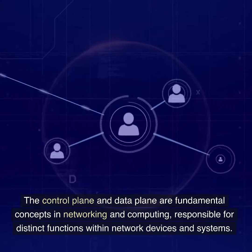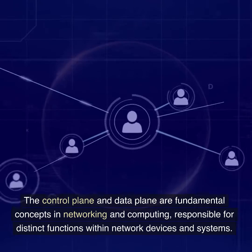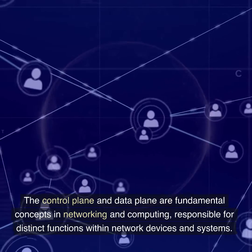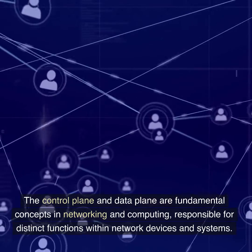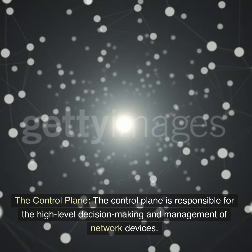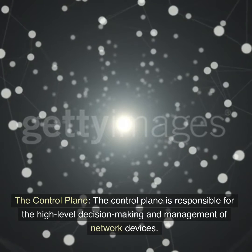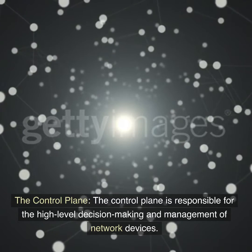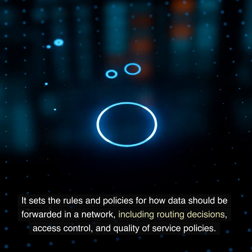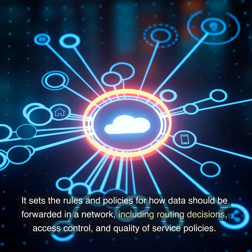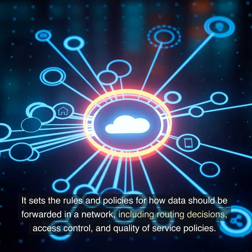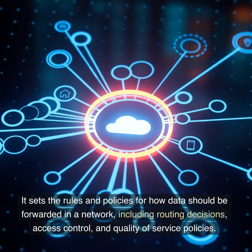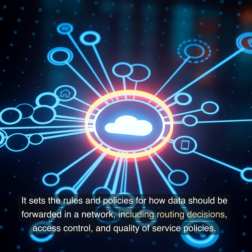The control plane and data plane are fundamental concepts in networking and computing, responsible for distinct functions within network devices and systems. The control plane is responsible for the high-level decision-making and management of network devices. It sets the rules and policies for how data should be forwarded in a network, including routing decisions, access control, and quality of service policies.